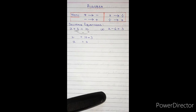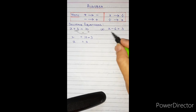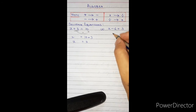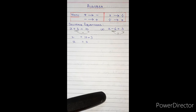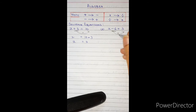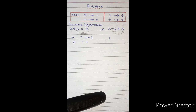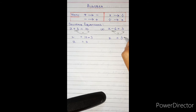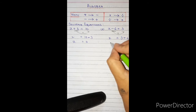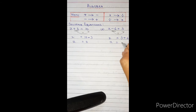Our second example to solve is x − 6 = 3. We put the numbers together and leave the variable on one side. The number here is minus 6; it will change to plus 6 on the other side. So x = 3 + 6.